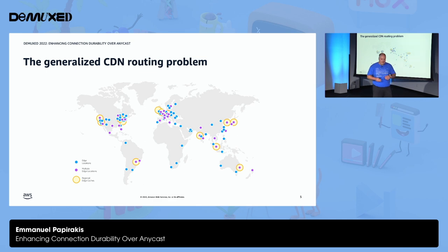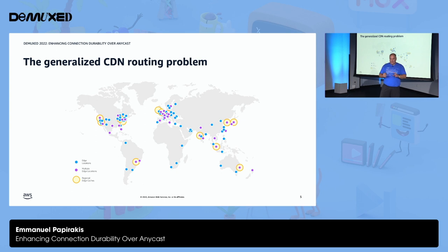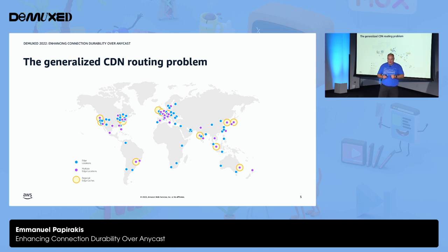If we take a look at generalized CDN routing — we see a popular CDN with different points of presence, which we call POPs. Those POPs need to receive traffic. So how do you decide which POP gets what traffic? There are a few strategies for it, but there are also caveats. In some regions it's easier to build POPs than in others, so sometimes there are regions with lots of capacity and regions with less capacity.